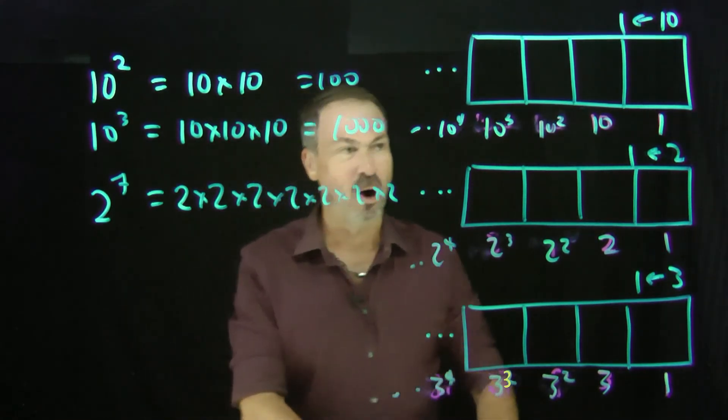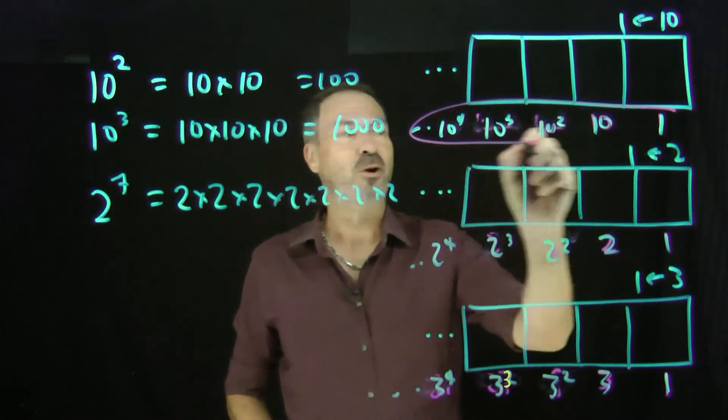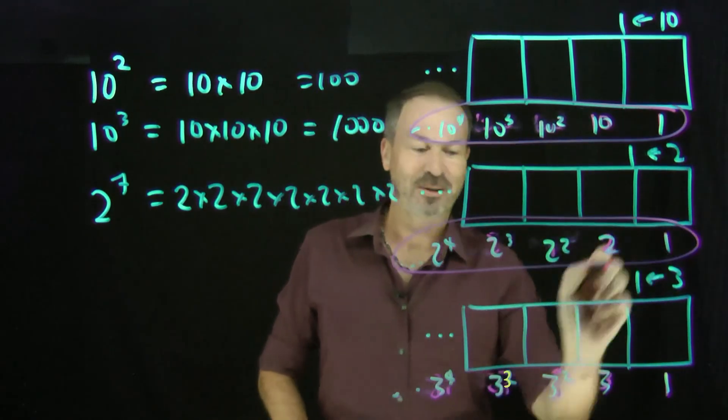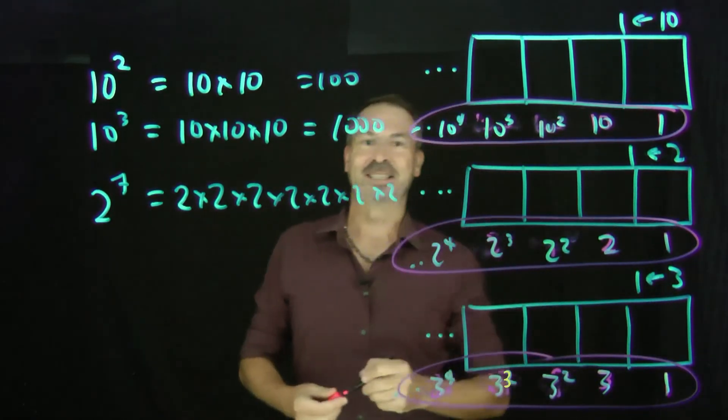And now we've got this lovely uniform notation for the dot values in all different types of machines. Very handy.